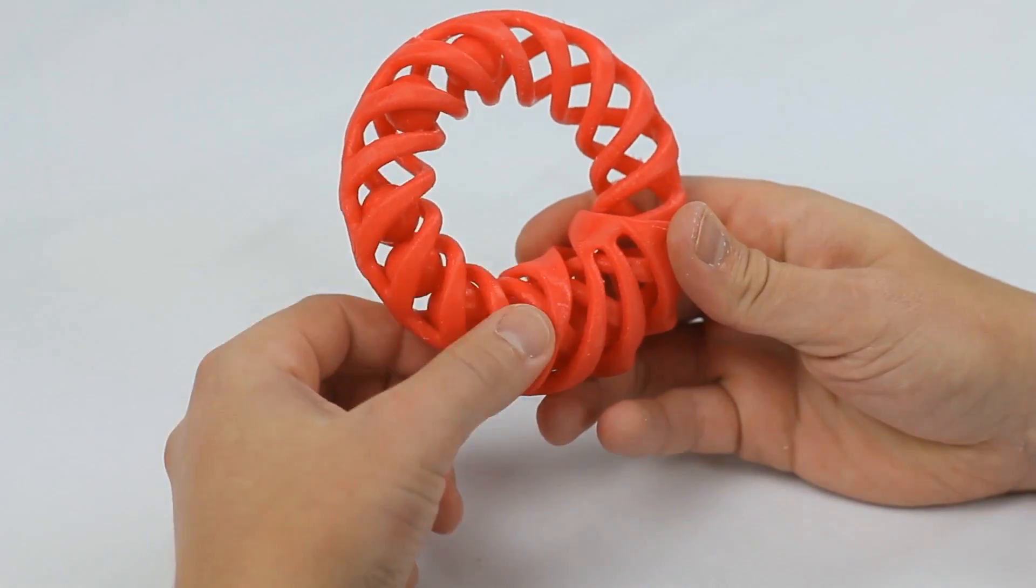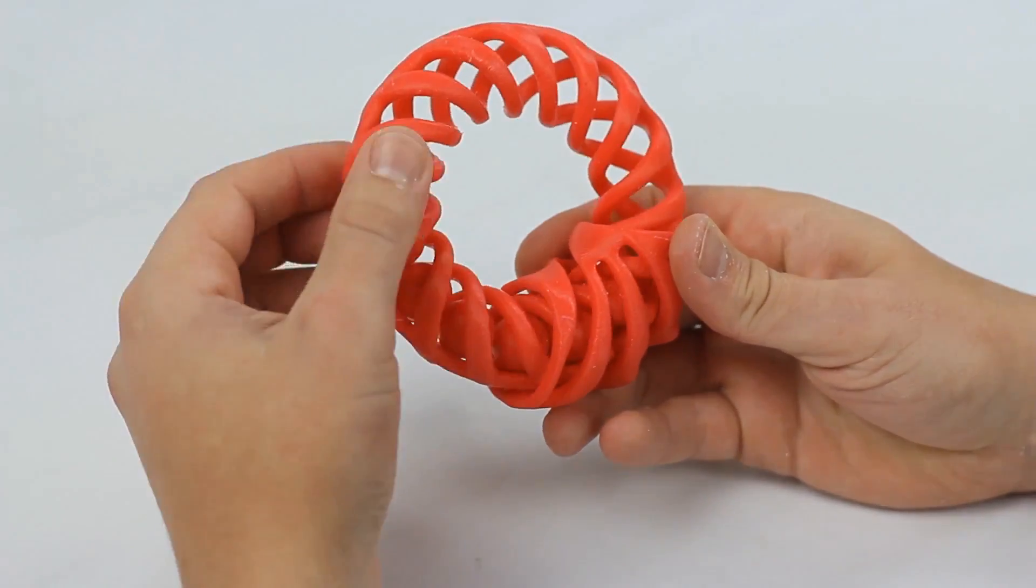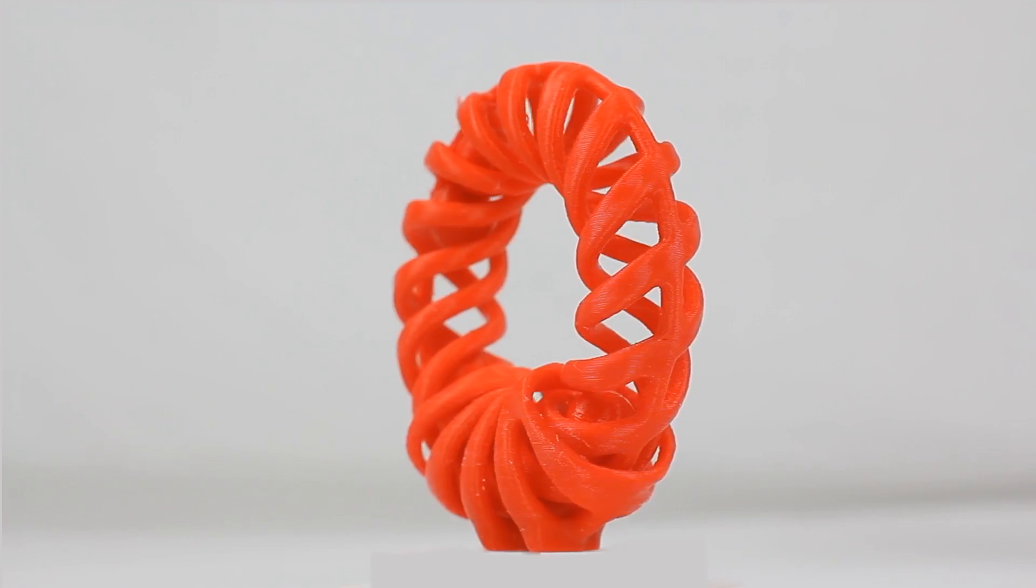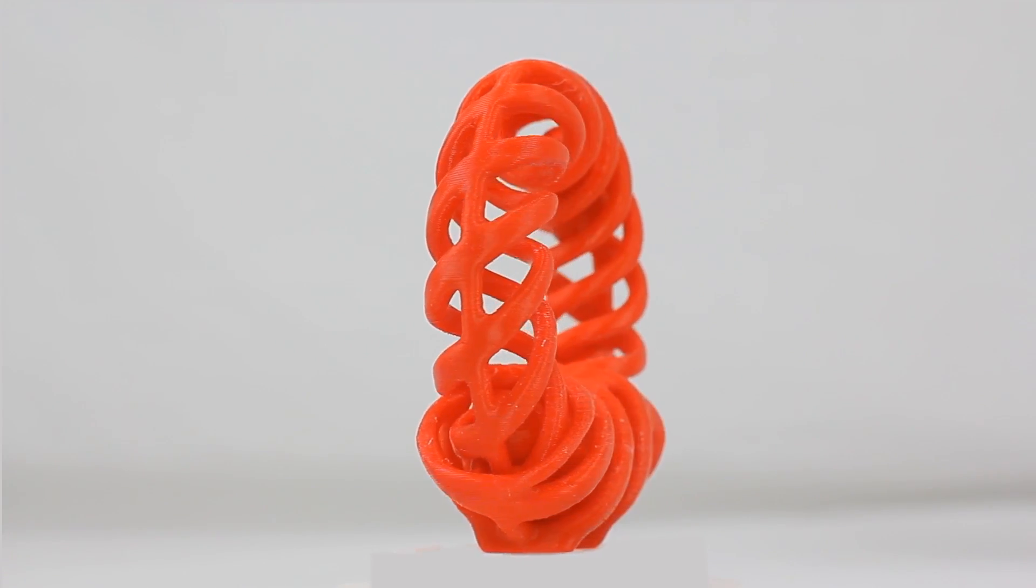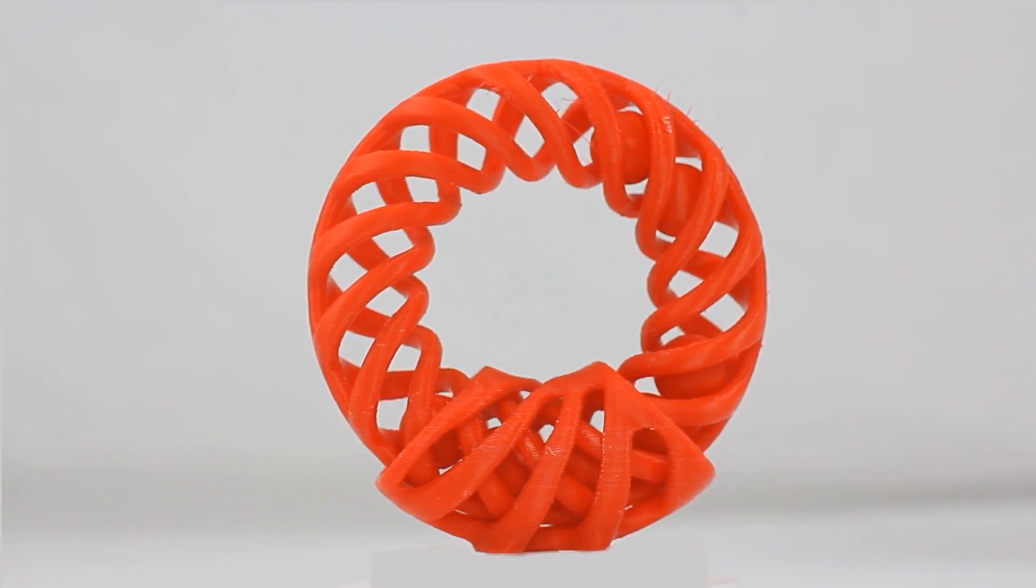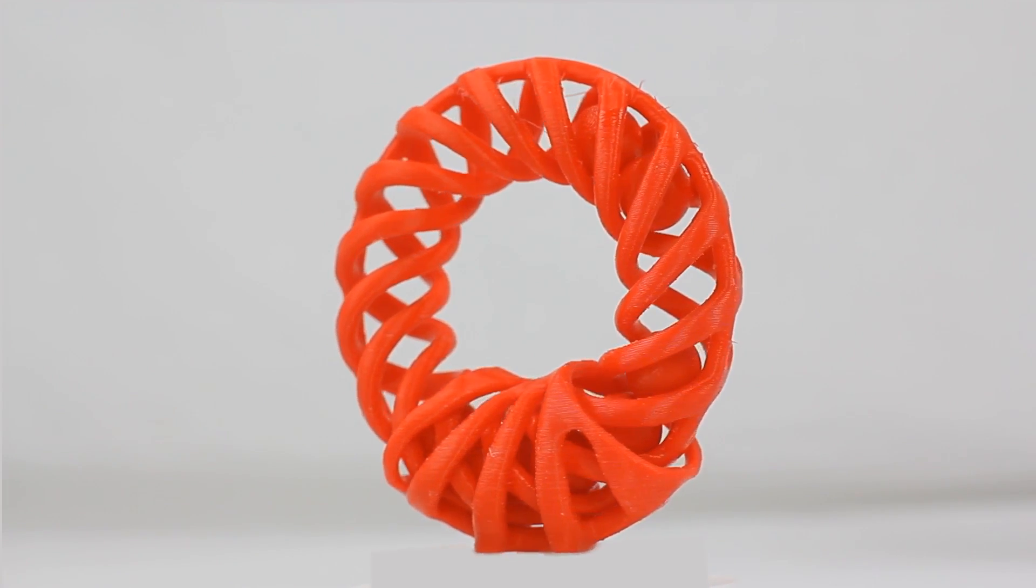702 is Polymaker's new breakthrough solution freeing extrusion based printing and taking the technology into the league of SLS. Now you can rival the dexterity of powdered support with minimal labor, unleashing your desktop machine to confidently explore uncharted geometry.